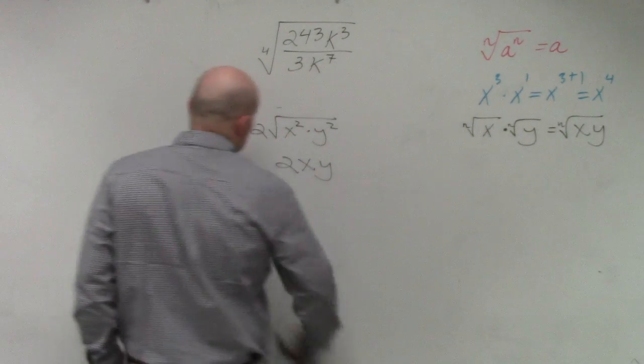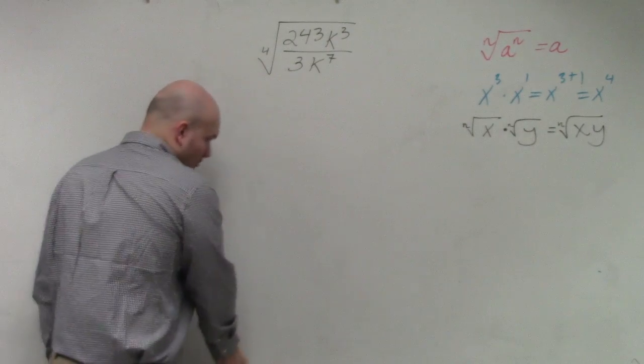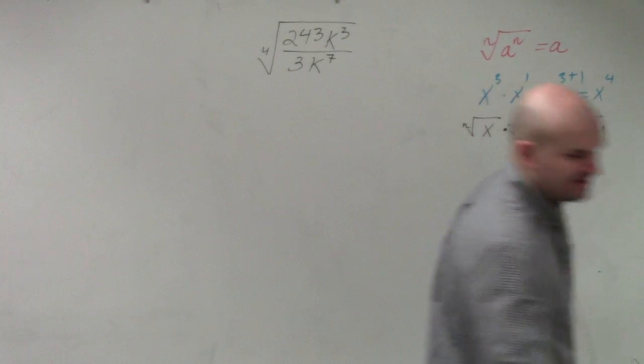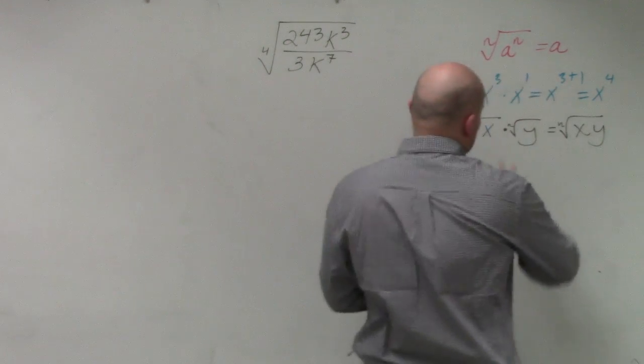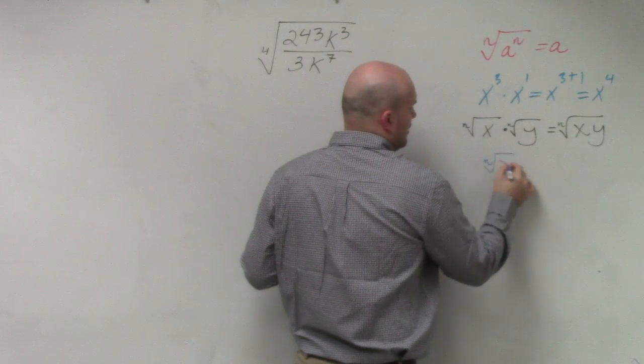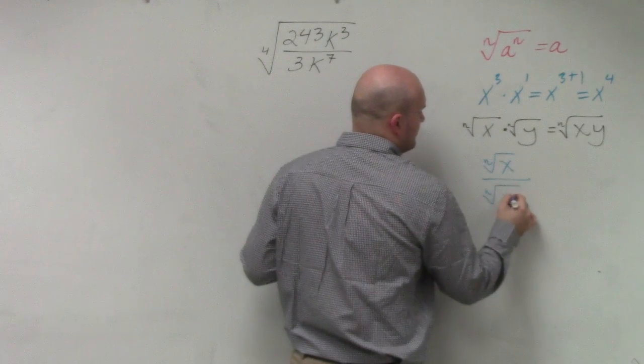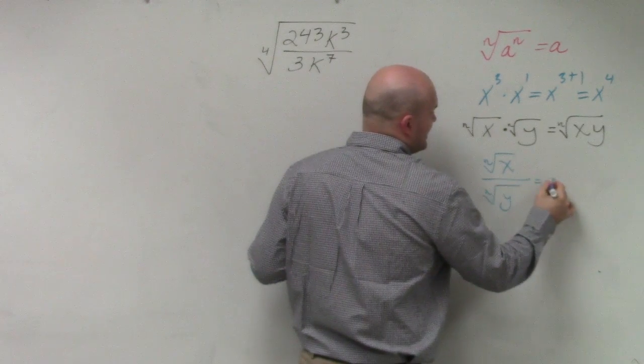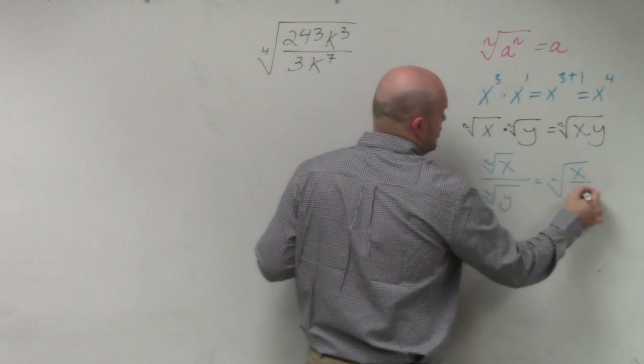When we're doing division, again, the rule of division, or one of the rules of division with my monomials, was very similar to multiplication. If I have the nth root of x over the nth root of y, I can just rewrite that as the nth root of x over y.